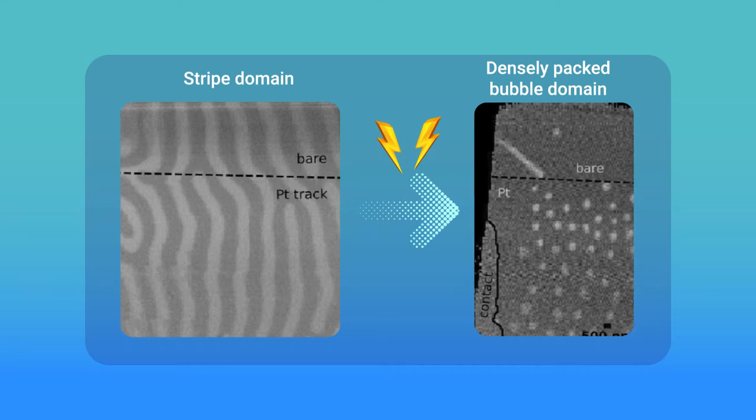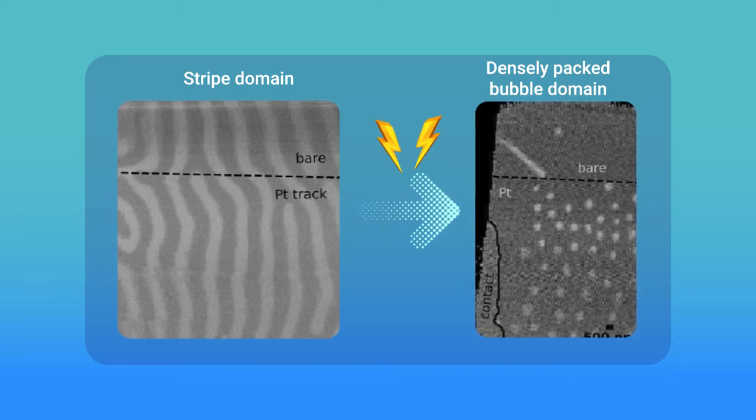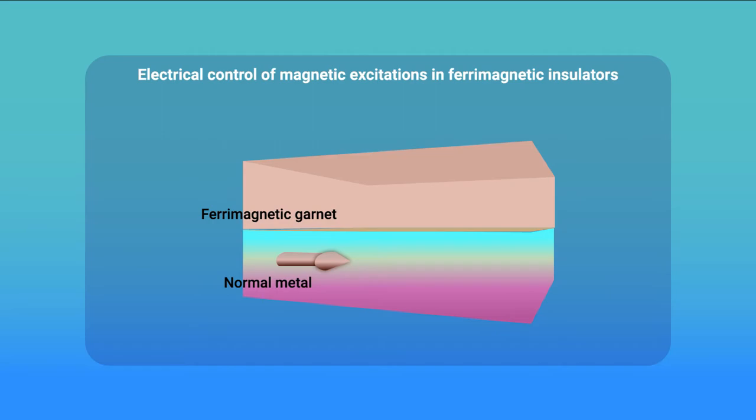Avji emphasizes the electrical control of magnetic excitations in ferromagnetic insulators by heavy metal contacts.